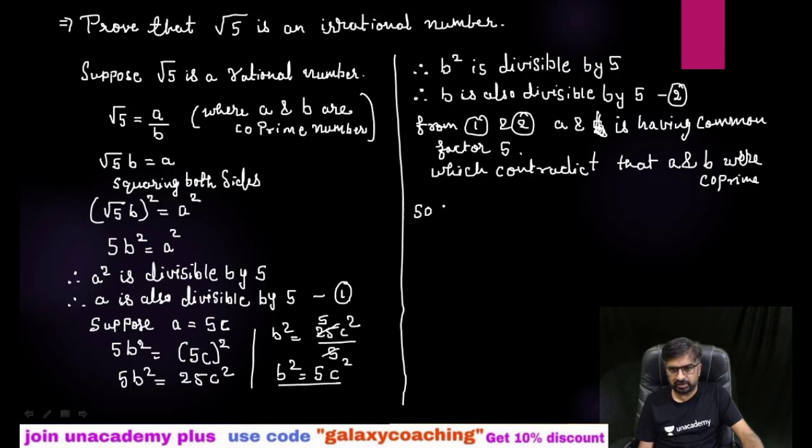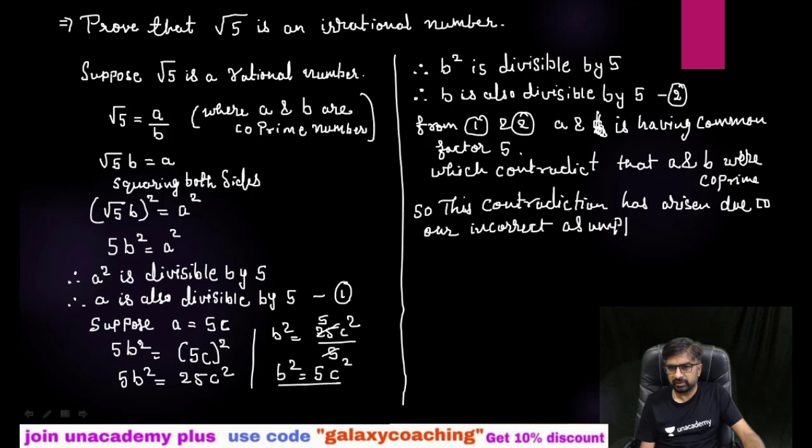So this contradiction, you need to write down a statement. So this contradiction has arisen due to our incorrect supposition or assumption, incorrect assumption that root 5 is rational. What we had supposed, that root 5 is rational, that is incorrect.